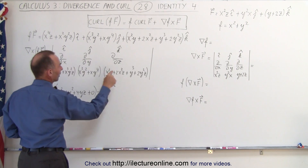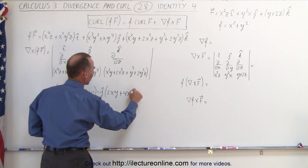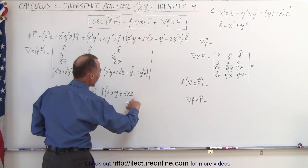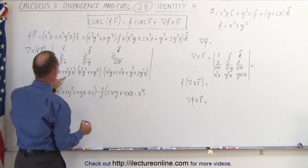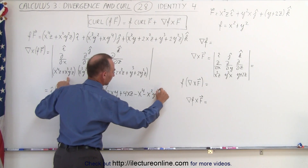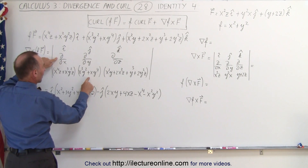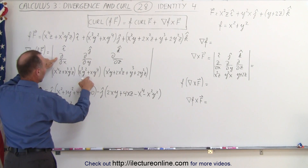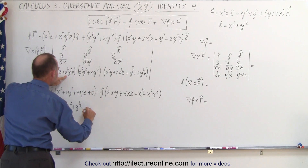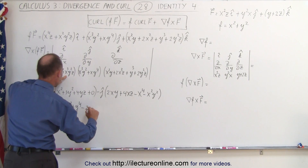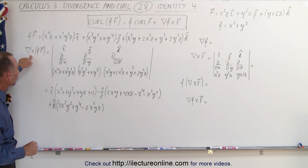For the J component, we have the partial with respect to X of this quantity — two terms with X: 2XY plus 4XZ — minus the partial with respect to Z of this quantity. We have two Z terms, giving minus X to the fourth and minus X squared Y squared. Then the K component equals the partial with respect to X of this quantity: 3X squared Y squared plus Y to the fourth, minus the partial with respect to Y, which gives minus 2X squared YZ. So we have the I, J, and K components of the curl of the product.